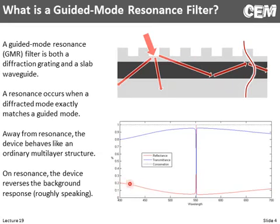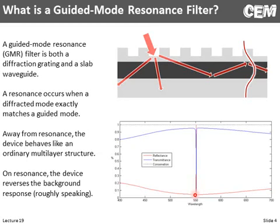The red line is reflectance, the blue line is transmittance. But in this very narrow range of frequencies where we couple into a guided mode, the reflection and transmission actually reverses, and we get this very, very narrow band of resonance. So it's a very good way to realize a narrow filter.